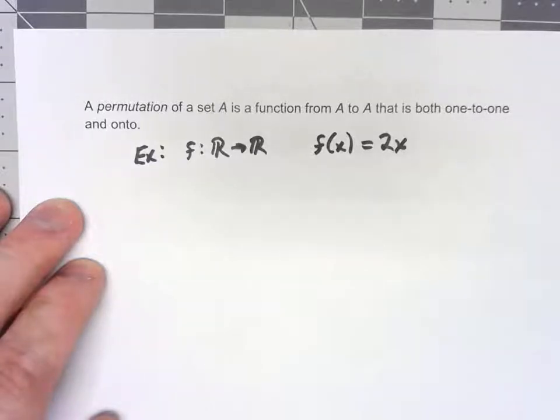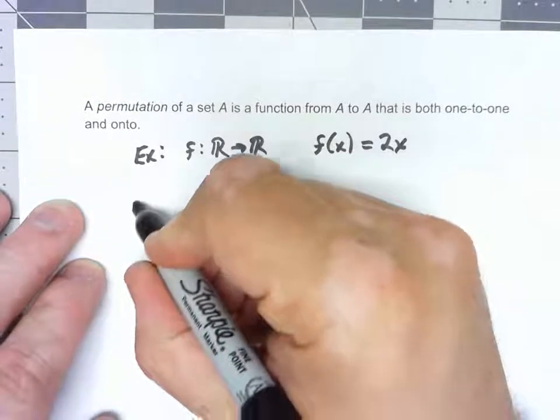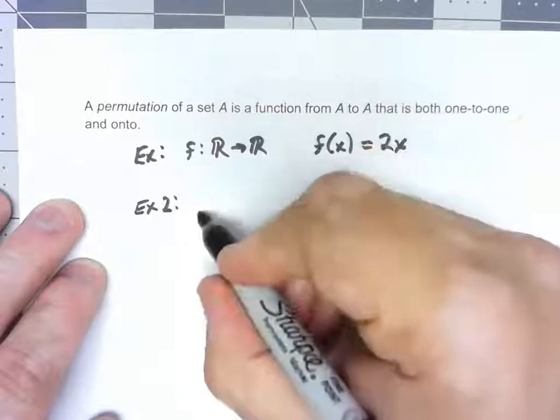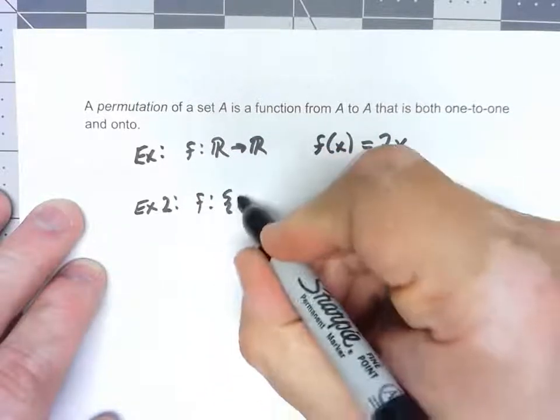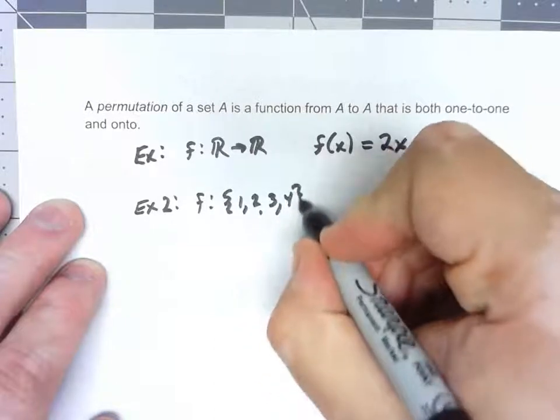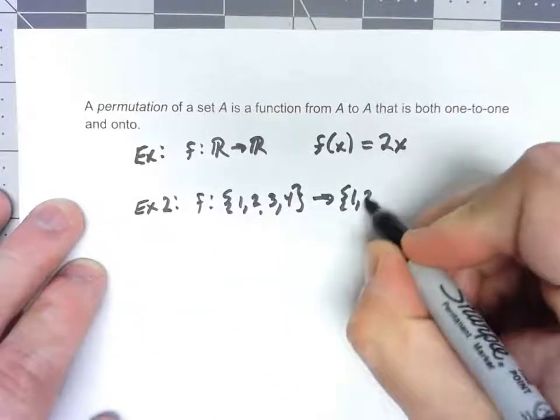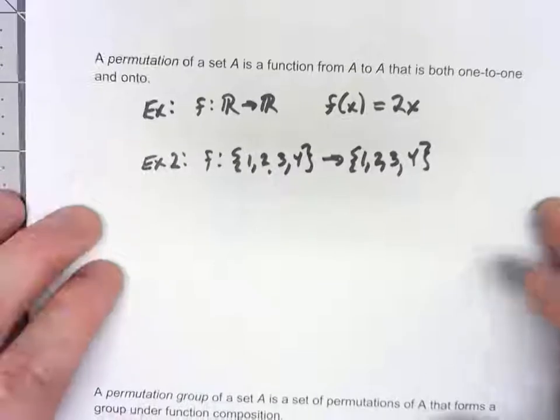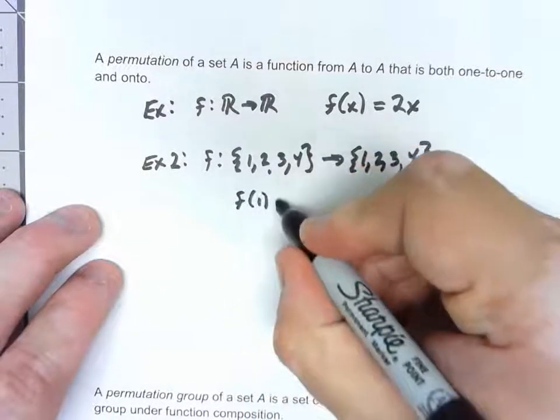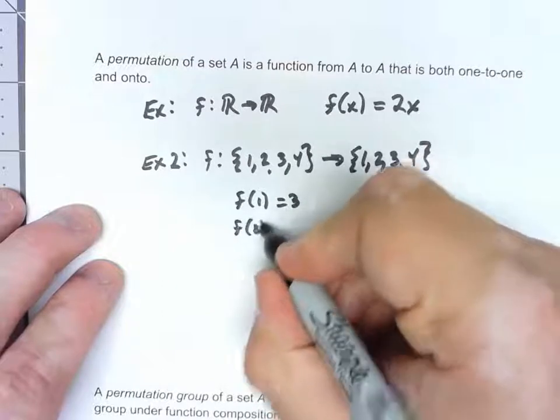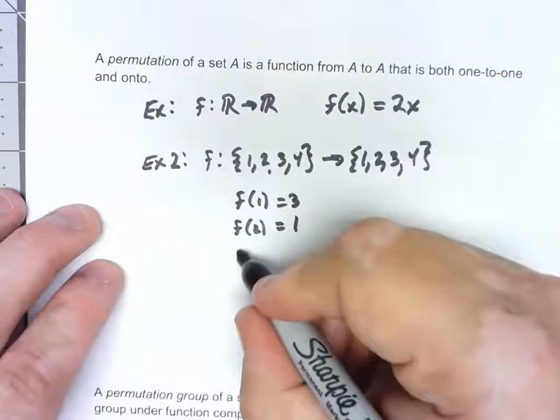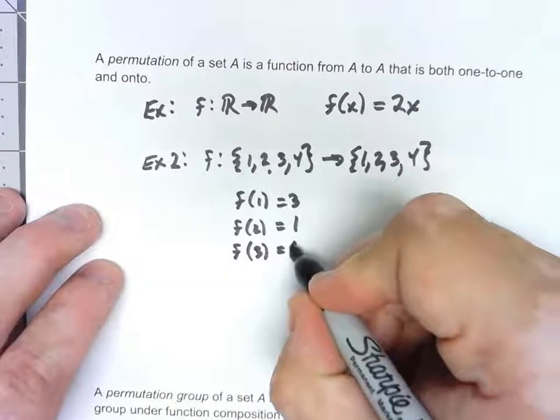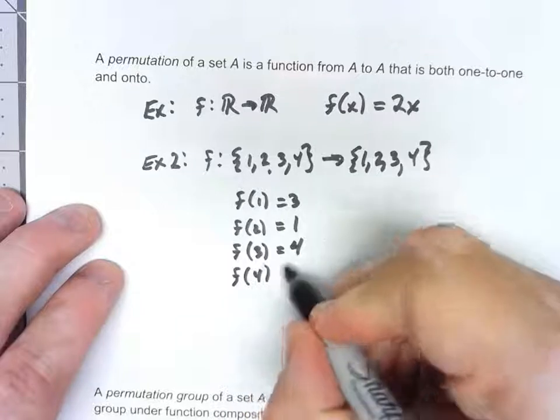However, what we really want to focus on instead are permutations of finite sets. So for example, we might have a function from the set {1, 2, 3, 4} to itself, and we could define that by something like f(1) = 3, f(2) = 1, f(3) = 4, and f(4) = 2.